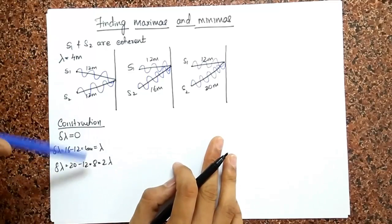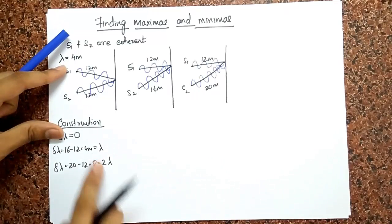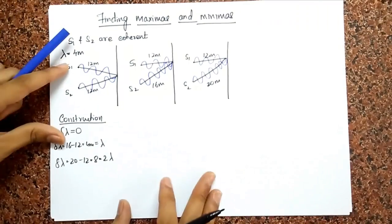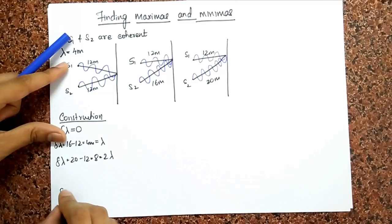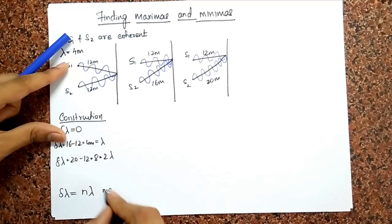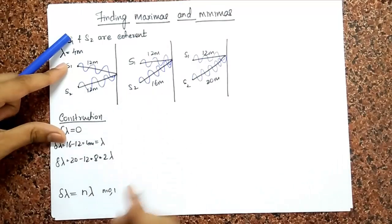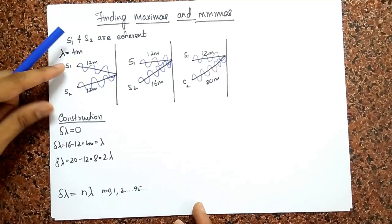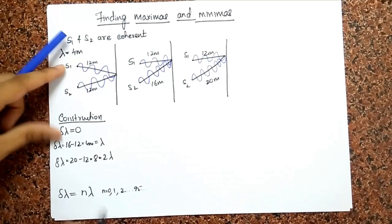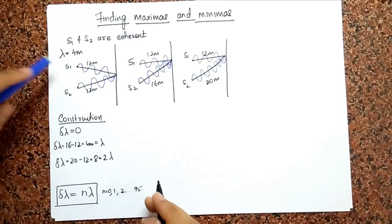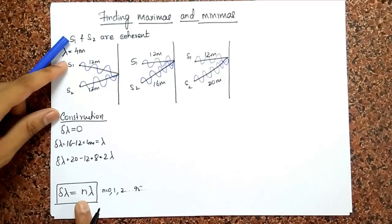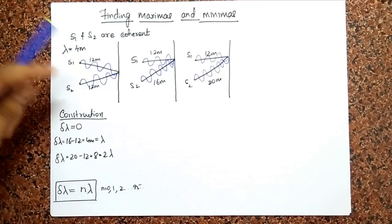Are you getting the pattern? For path differences of lambda, two lambda, three lambda, four lambda, five lambda — all n lambda — I get constructive interference. So the general condition is: delta equals n lambda, where n is an integer. n can be 0, 1, 2, 3, and so on. For all these cases, I get constructive interference — that's the criterion for two coherent waves to constructively interfere, in terms of path difference.